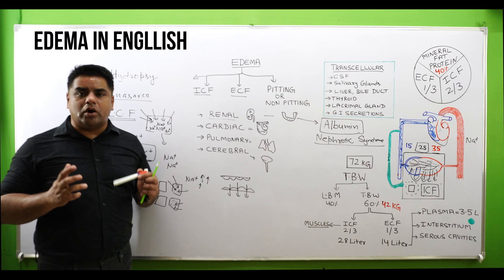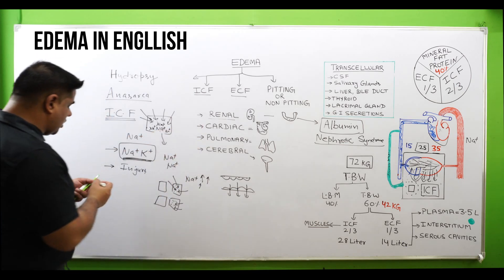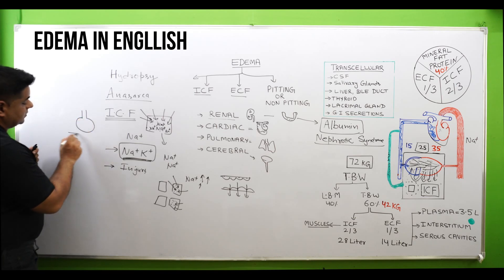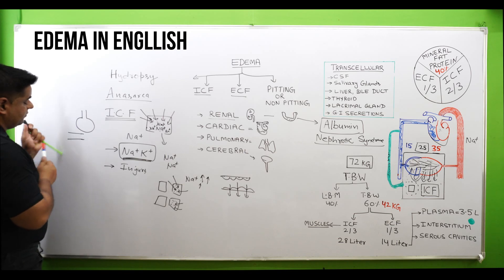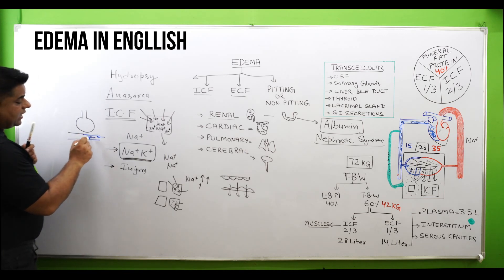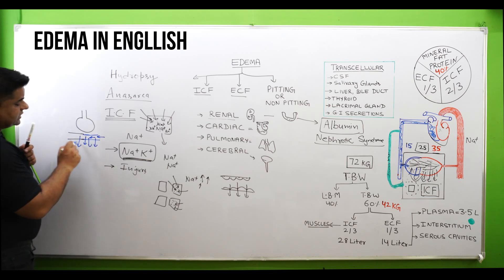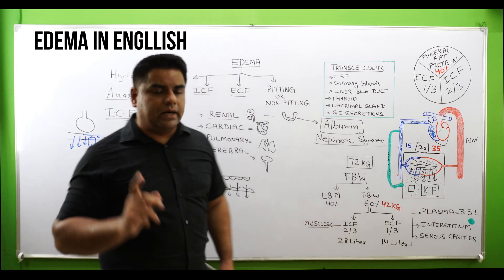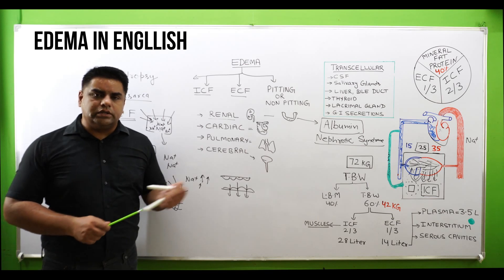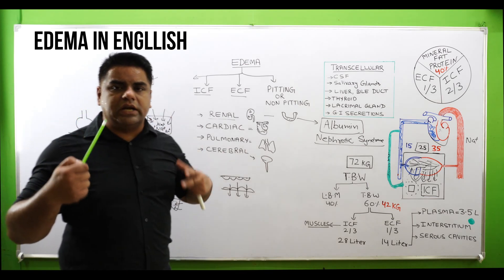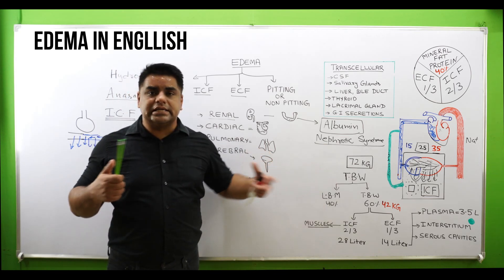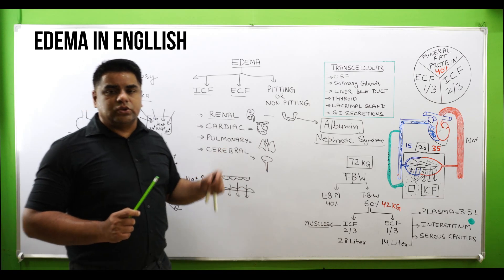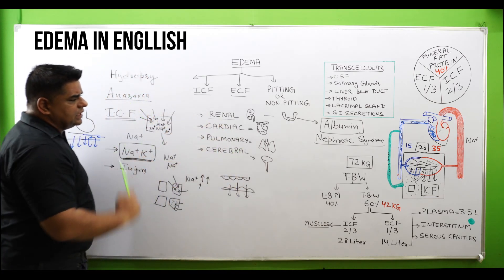Pulmonary edema occurs when fluid leaks out into the pulmonary spaces, cells of the lungs, or lung parenchyma from the pulmonary vasculature — pulmonary artery and pulmonary vein. Cerebral edema is a serious matter: there is no lymphatic drainage system in the central nervous system, so the brain is entirely dependent on the blood-brain barrier, and cerebral edema can lead to death.